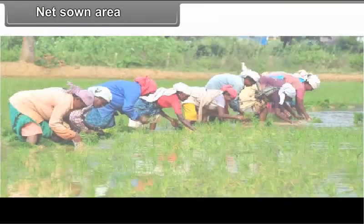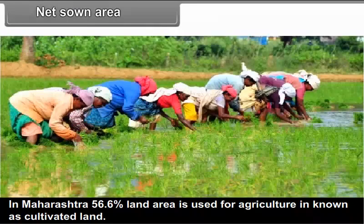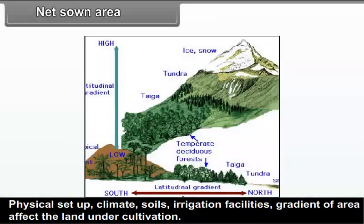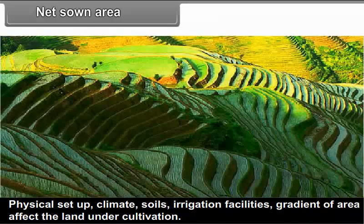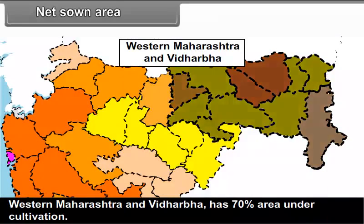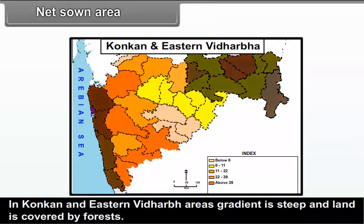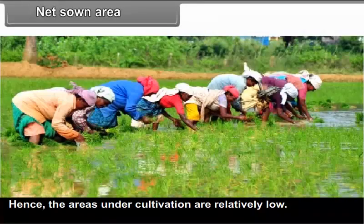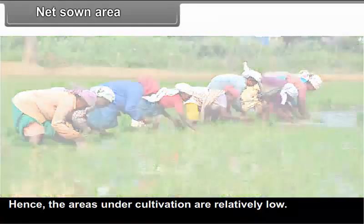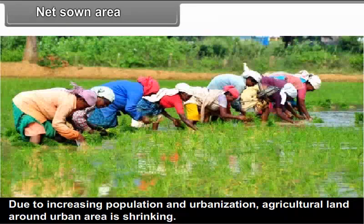Net sown area: In Maharashtra, 56.6% of land area is used for agriculture, known as cultivated land. Physical setup, climate, soils, irrigation facilities and gradient of the area affect the land under cultivation. Western Maharashtra and Vidarbha have 70% area under cultivation. In Konkan and eastern Vidarbha, the gradient is steep and land is covered by forests, so areas under cultivation are relatively low. Due to increasing population and urbanization, agricultural land around urban areas is shrinking.